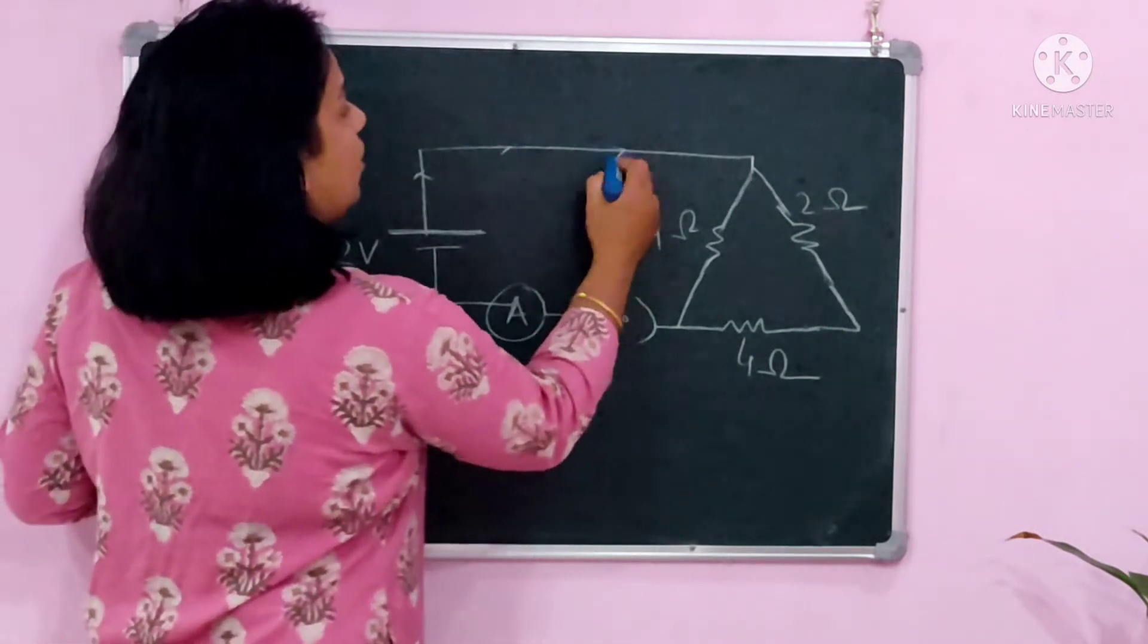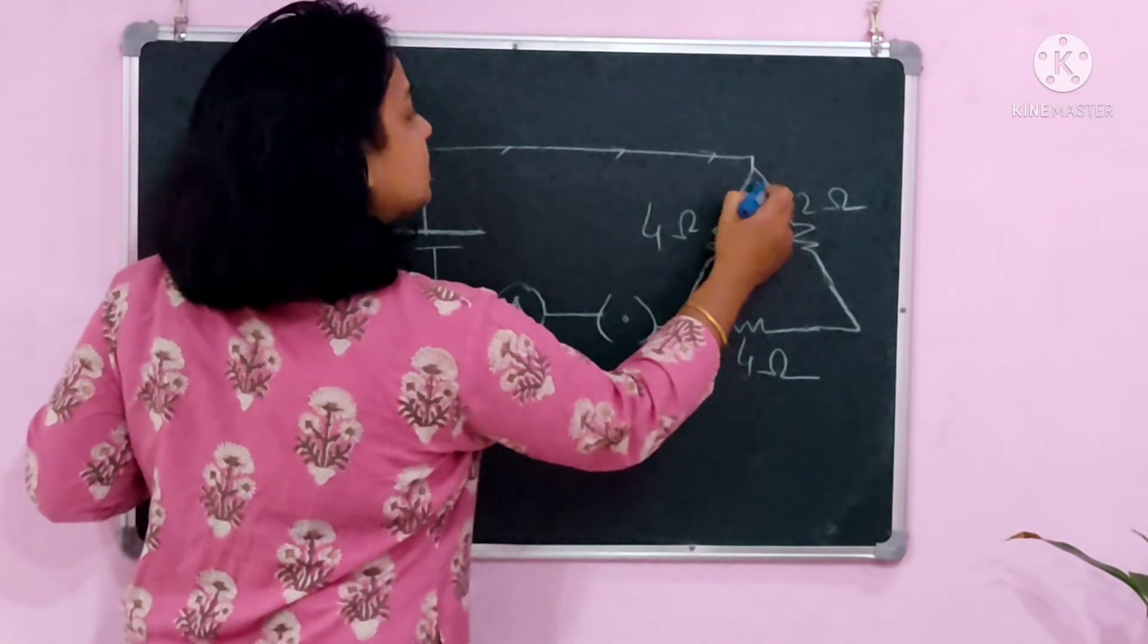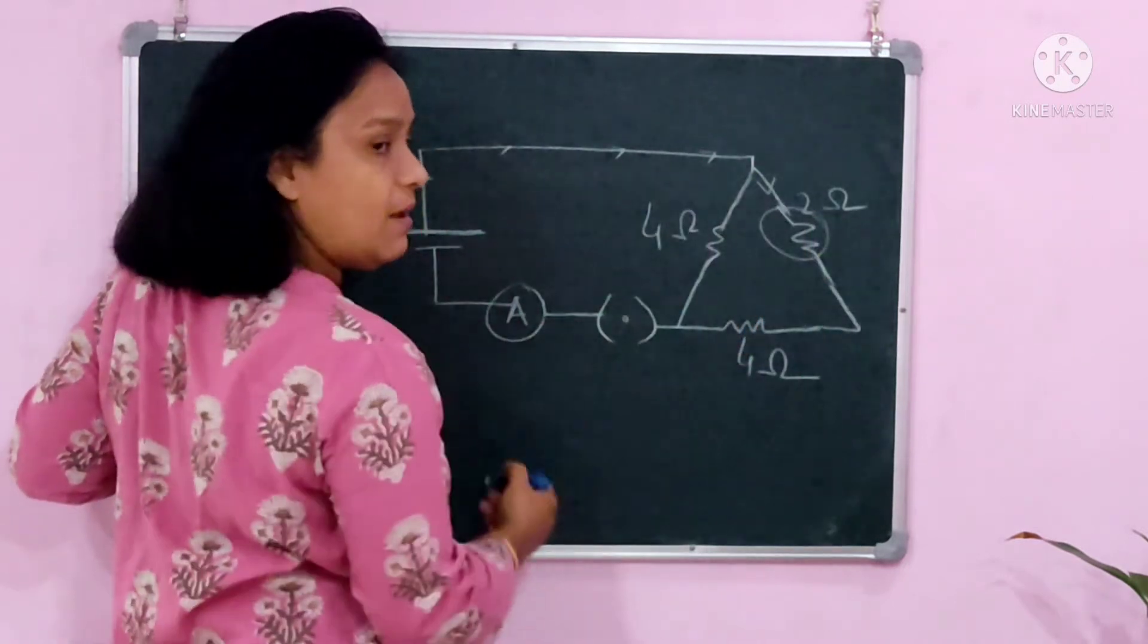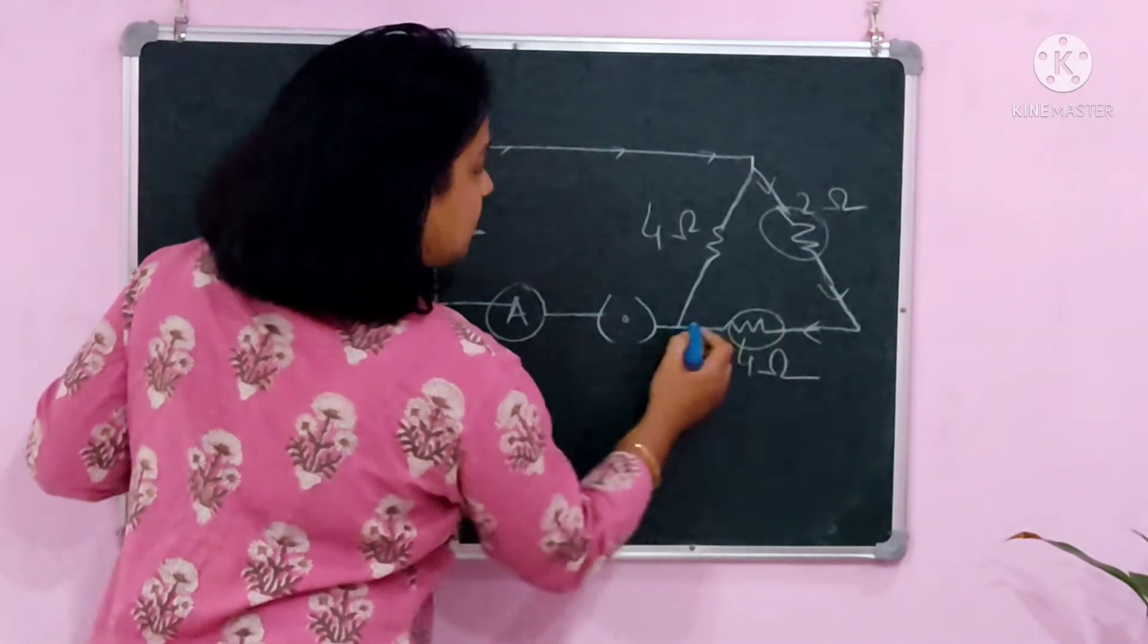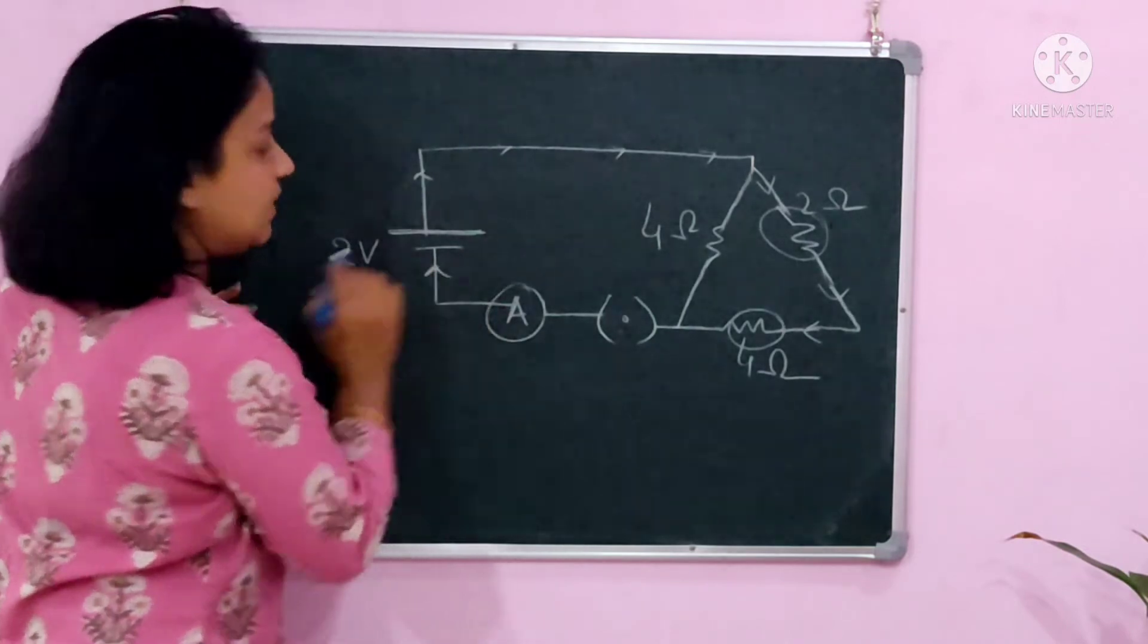We start from here and as we go along the path, we meet this resistor. Going ahead, we meet this resistor. Finally, we keep going and reach the negative terminal.